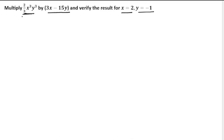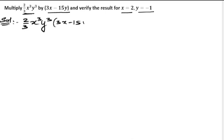Let us first do the multiplication. Solution: 2/3 x³y³ multiplied by (3x − 15y). So we multiply 2/3 with 3 first — multiplying the numbers — and then for x³ × x, since the bases are the same, the powers are added, giving x to the power of 4.